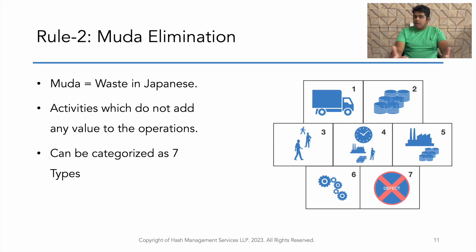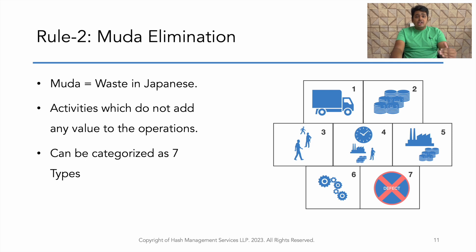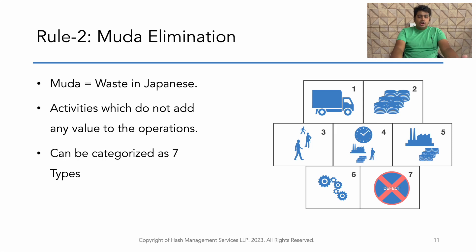Rule 2 is Muda elimination. What is Muda? Muda is waste in Japanese. The activities which do not add any value to the work being done are called waste or non-value-added activities. There are 7 types of non-value-added activities or waste in manufacturing. They are transportation, inventory, motion, waiting, overproduction, overprocessing, and finally defects.